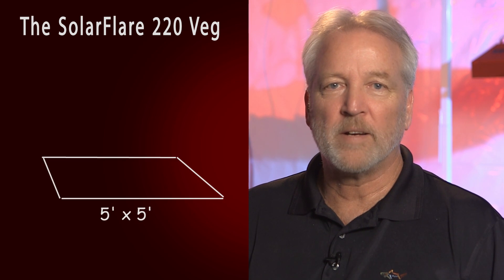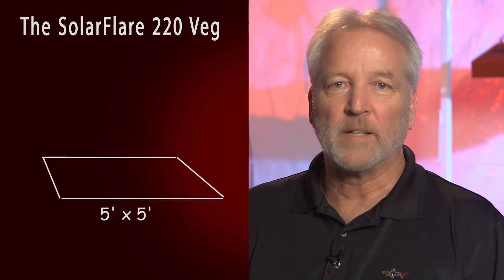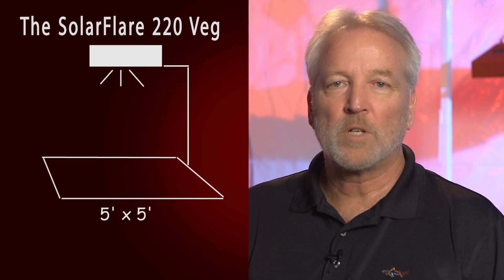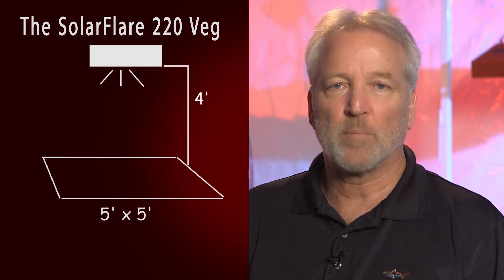For vegetative growth, the Solar Storm 220 can cover an area of up to 5 feet by 5 feet. In this case, you want to position the light about 4 feet above your plants.